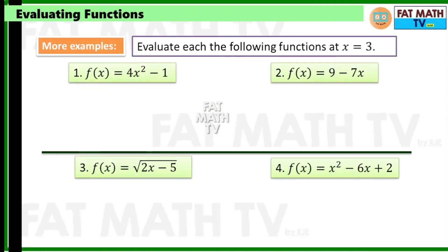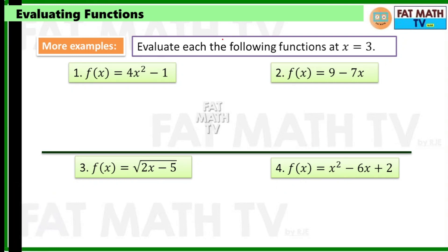Okay, let us have more examples. Evaluate each of the following functions at x equals 3. For each of these four functions, you just replace x with positive 3. So number 1, f of x equals 4x squared minus 1.